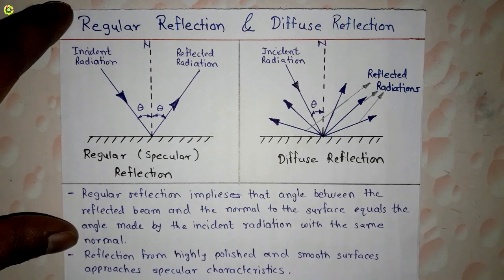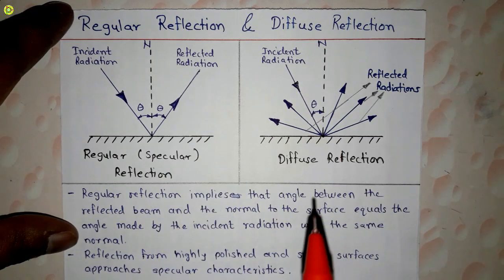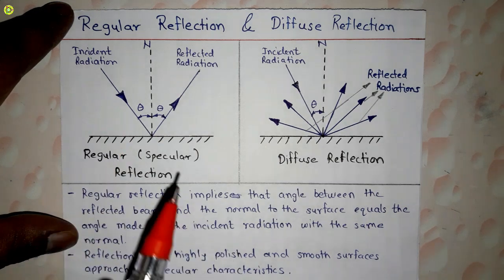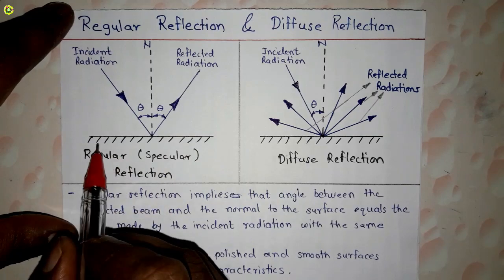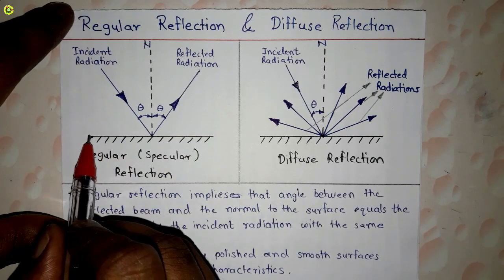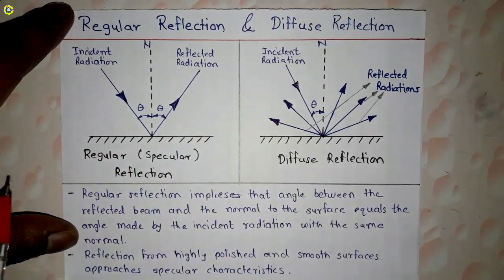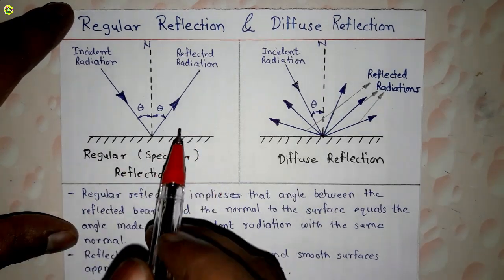In this video we are going to study about regular reflection and diffuse reflection. In regular reflection, suppose this is the surface — a highly polished and smooth surface.